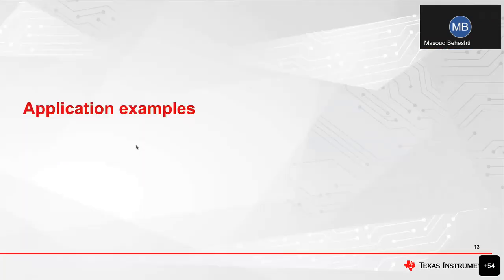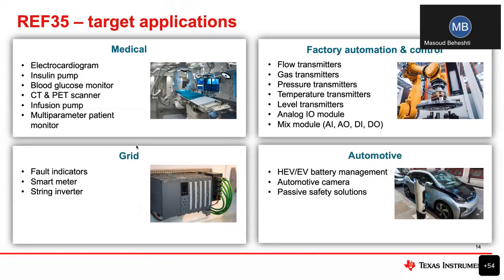This device can be used in a wide variety of applications where precision and low power are required. In medical, examples include electrocardiogram, insulin pump, blood glucose meter, CT and PET scanners. In grid applications: fault indicators, smart meters, and string inverters. There's a long list of use cases in factory automation and control, especially field transmitters. And in automotive, whether it's HEV, EV, battery management, camera systems, or passive safety solutions for traditional or HEV vehicles.